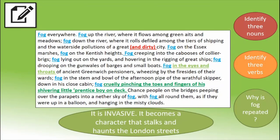Fog everywhere. Fog up the river where it flows among green aits and meadows. Fog down the river where it rolls defiled among the tiers of shipping and the waterside pollutions of a great and dirty city. Fog on the Essex marshes. Fog on the Kentish heights. Fog creeping into the cabooses of collier brigs. Fog lying out on the yards and hovering in the rigging of great ships. Fog drooping on the gunwales of barges and small boats. Fog in the eyes and throats of ancient Greenwich pensioners wheezing by the firesides of their wards. Fog in the stem and bowl of the afternoon pipe of the wrathful skipper down in his close cabin. Fog cruelly pinching the toes and fingers of his shivering little 'prentice boy on deck. Chance people on the bridges peeping over the parapets into a nether sky of fog, with fog all round them, as if they were up in a balloon and hanging in the misty clouds.